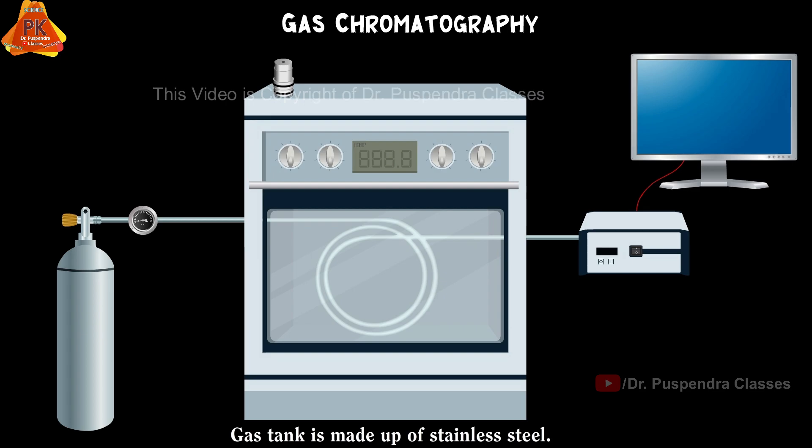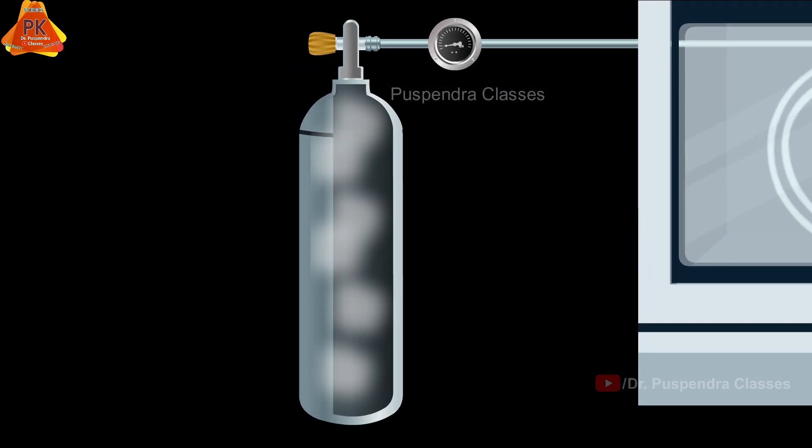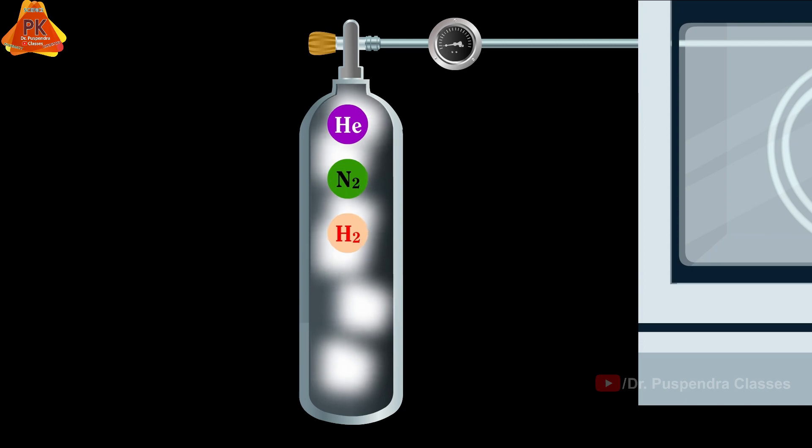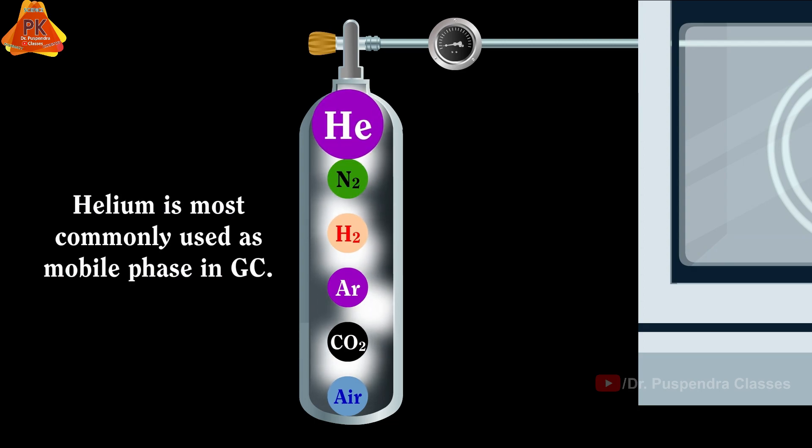The first part is the gas tank, which is made up of stainless steel and contains gas. Gas can be used as a mobile phase, which may be helium, nitrogen, hydrogen, argon, carbon dioxide, and air. Amongst all these gases, helium is most commonly used as a mobile phase in GC.